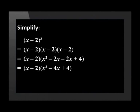Add the like terms in the second bracket and get the next line: (x - 2)(x² - 4x + 4).